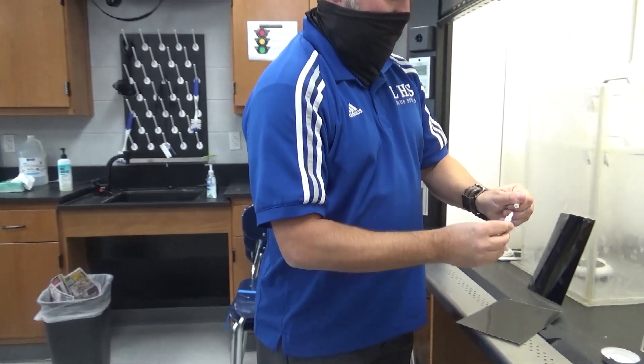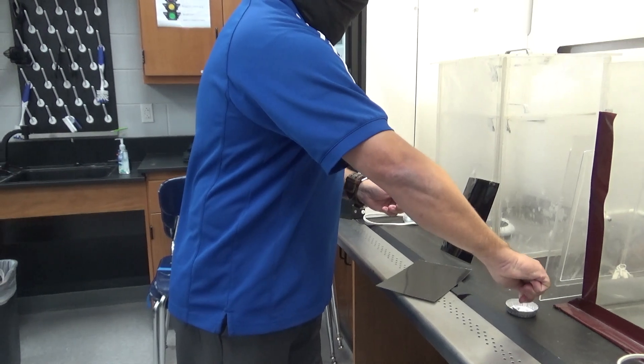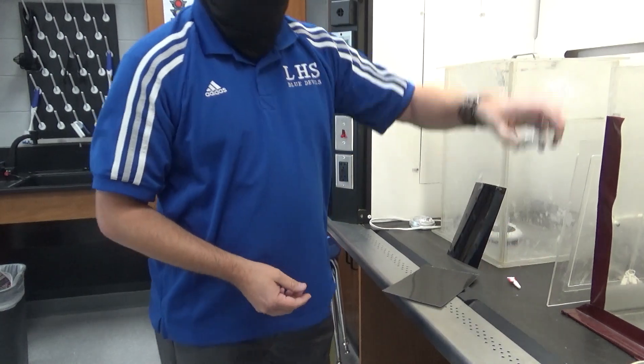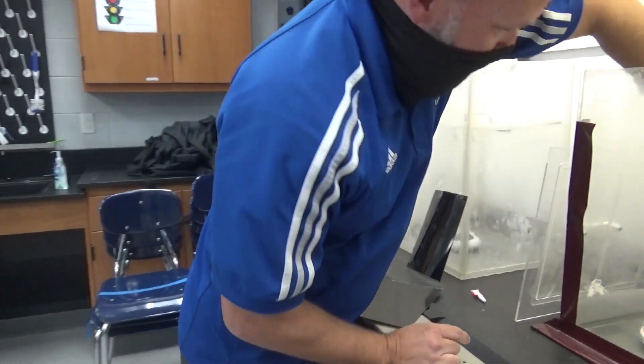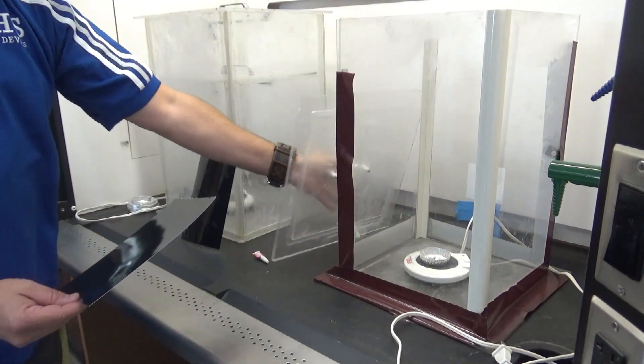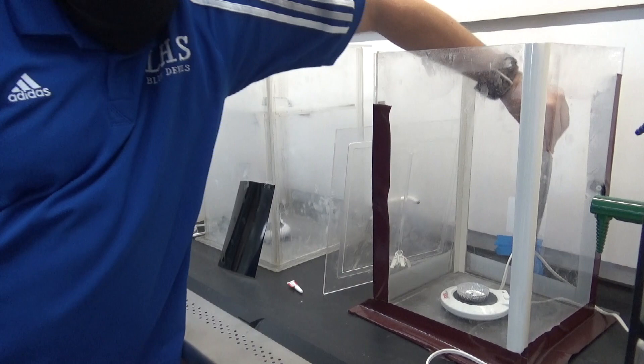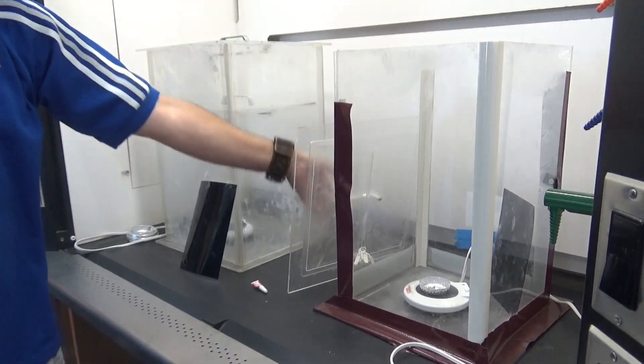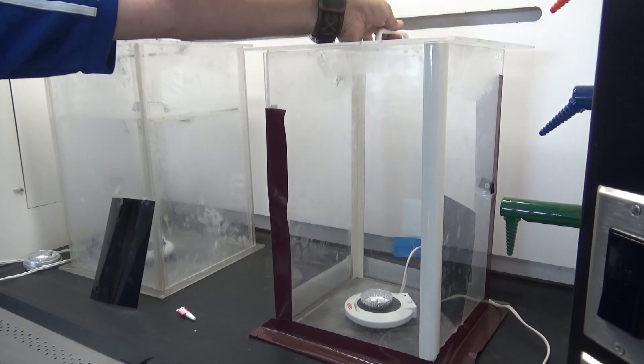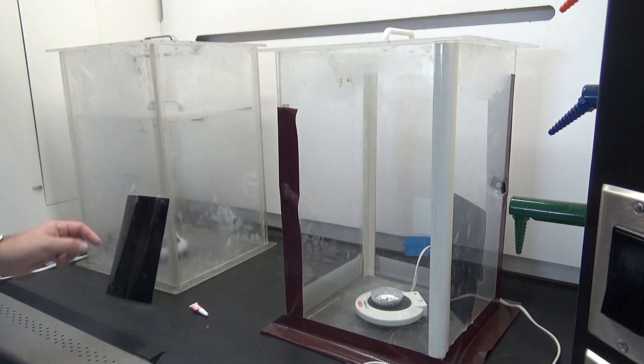So if we take the superglue, squeeze it into our little tin, put the tin on a coffee cup warmer. Okay, that's going to heat it up for us. And then we're going to take our card, stand it over in the corner, and put the lid on our fuming chamber. Okay, so as the coffee cup warmer heats up, all the fumes are going to float around and stick to the card.